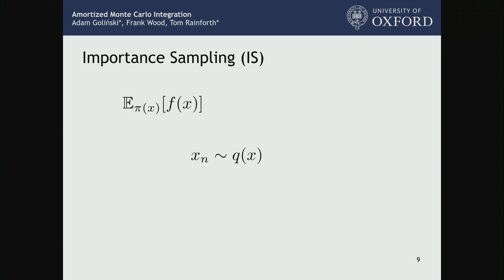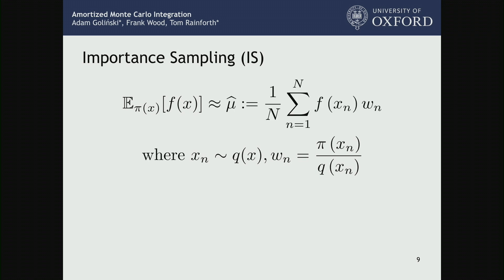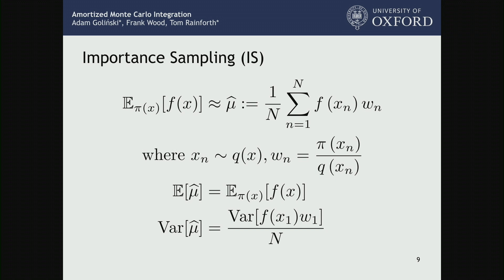Instead, what we're going to do is introduce something called a proposal, which I'll call q of x throughout. We draw samples from this proposal distribution and then weight those samples — sampling from something else, then applying weights as correction factors to bring us back to the distribution we cared about. We can then take this empirical average of these weighted samples. This has nice properties: it's an unbiased estimator, and it follows the law of large numbers, meaning variance of the estimator scales as the variance of the function over the number of samples.